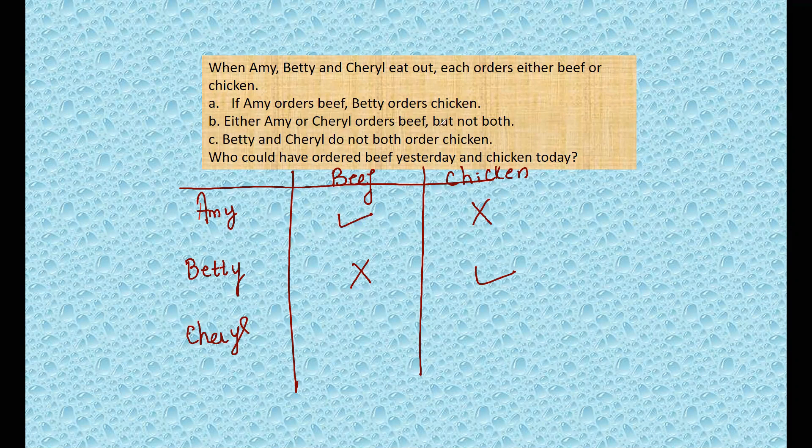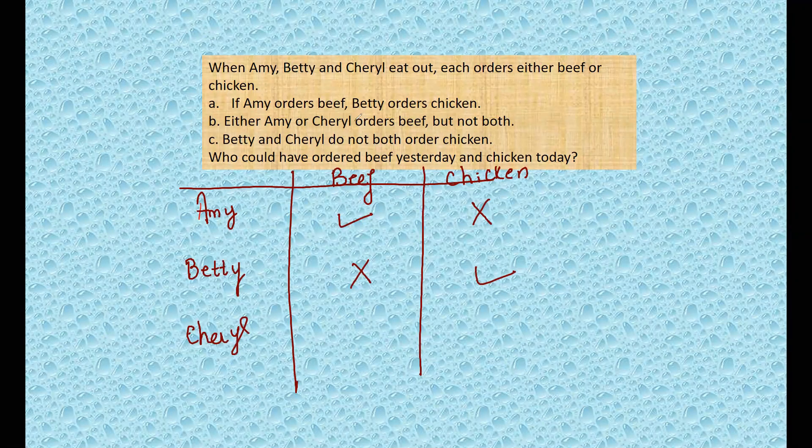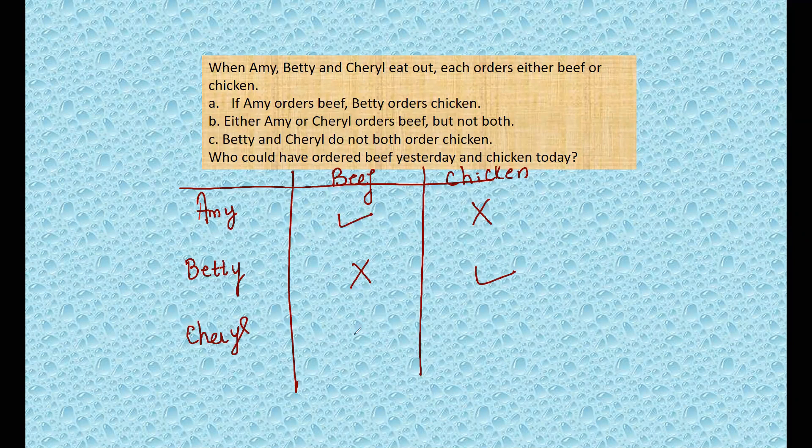Now either Amy or Cheryl orders beef, but not both. So Amy has ordered beef, so Cheryl will not order beef - you can make that conclusion. Now Betty and Cheryl do not both order chicken. So since Betty has ordered chicken, Cheryl will not order chicken. But you can see these two statements, you cannot be very clear.